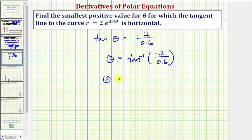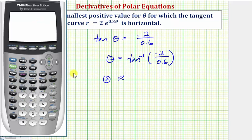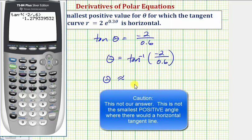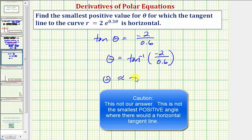We can take the inverse tangent on both sides, so theta equals arctan of negative two divided by 0.6. We'll go to the calculator — let's verify we're in radian mode. Pressing second tangent, negative two divided by 0.6, gives approximately negative 1.2793. Notice this angle is terminal in the fourth quadrant, not the second quadrant.